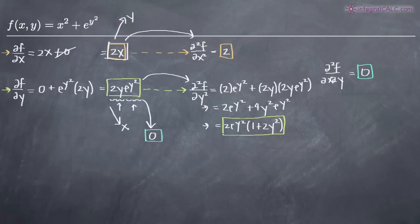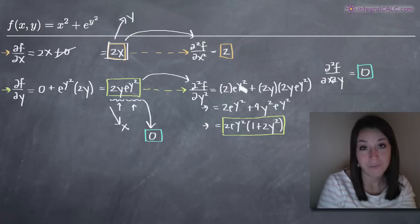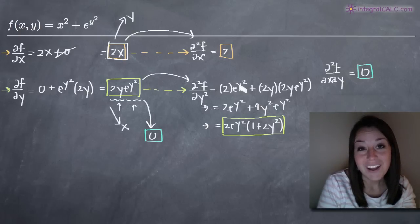We chose 2x because it was simpler. So again, when you're talking about second order partial derivatives, you want to calculate all three: the second order partial derivative with respect to x, with respect to y, and the mixed second order partial derivative. I hope that video helped you guys and I will see you in the next one. Bye!